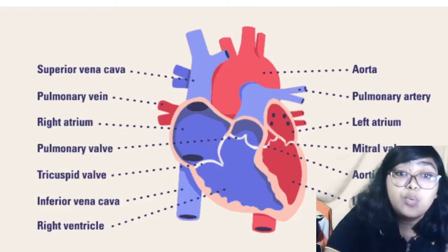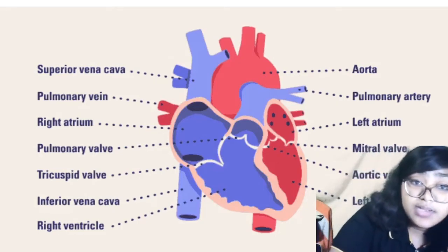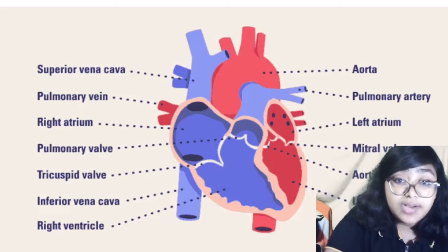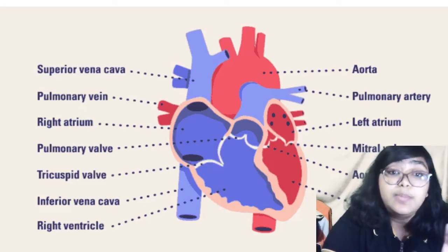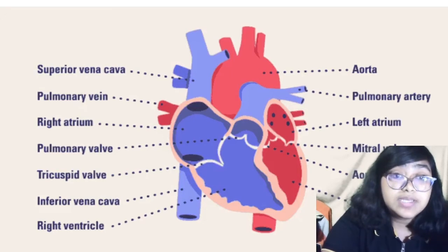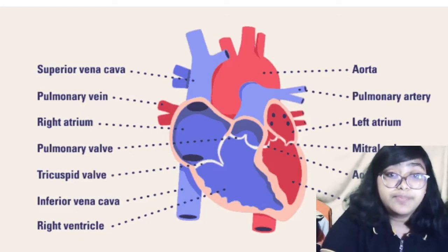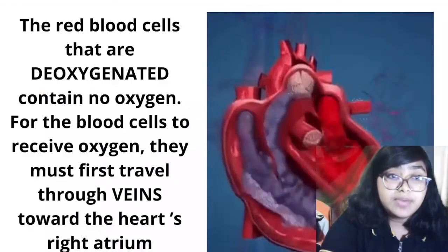Blood enters through the pulmonary vein into the left atrium. When the left atrium contracts, blood pumps into the lower chamber — the left ventricle. When the left atrium contracts, the left ventricle simultaneously relaxes, allowing blood to flow in. Then when the left ventricle contracts, the blood moves into the aorta and travels to all parts of the body.